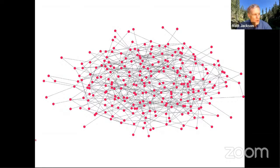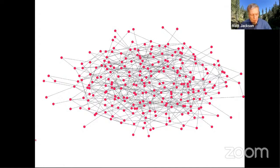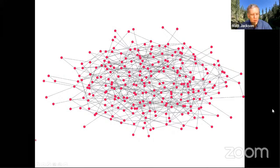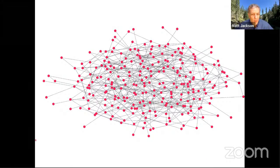Here's a picture of a high school — this is the computer-generated one. Each little dot is a student, and there's a link between two dots if those people are friends, meaning they do at least three activities together in a given week. This network looks kind of like a spaghetti bowl — just a bit of a mess. It's generated by taking the same number of students and friendships that exist in the real high school and placing them completely uniformly at random.